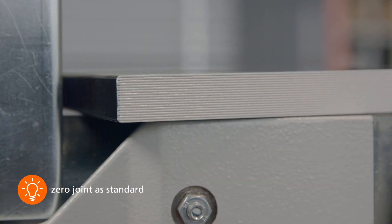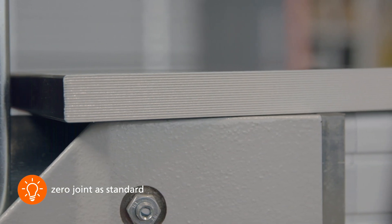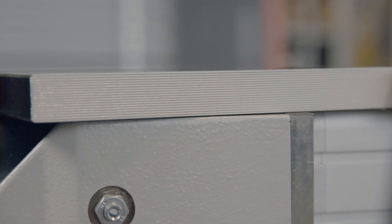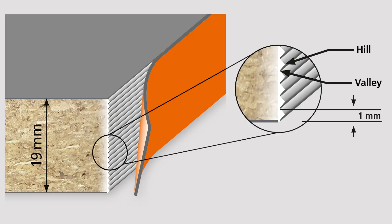With GlueJet, the adhesive is pressed into the plate structure under high pressure. Thanks to the 90 degree doctor blade division in a 1 millimeter grid, for example, on a 19 millimeter plate, 19 adhesive strips are applied with high precision.